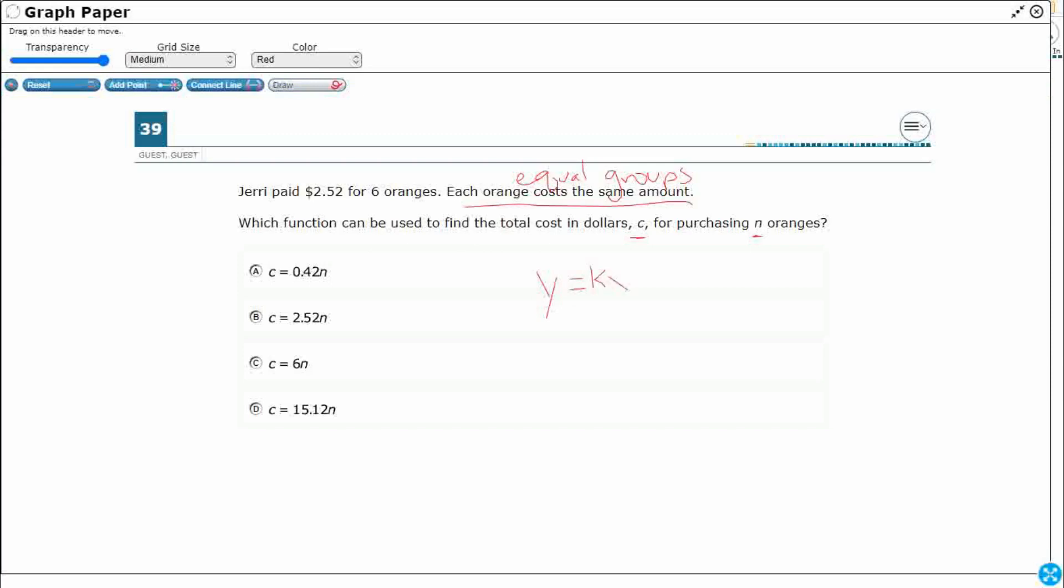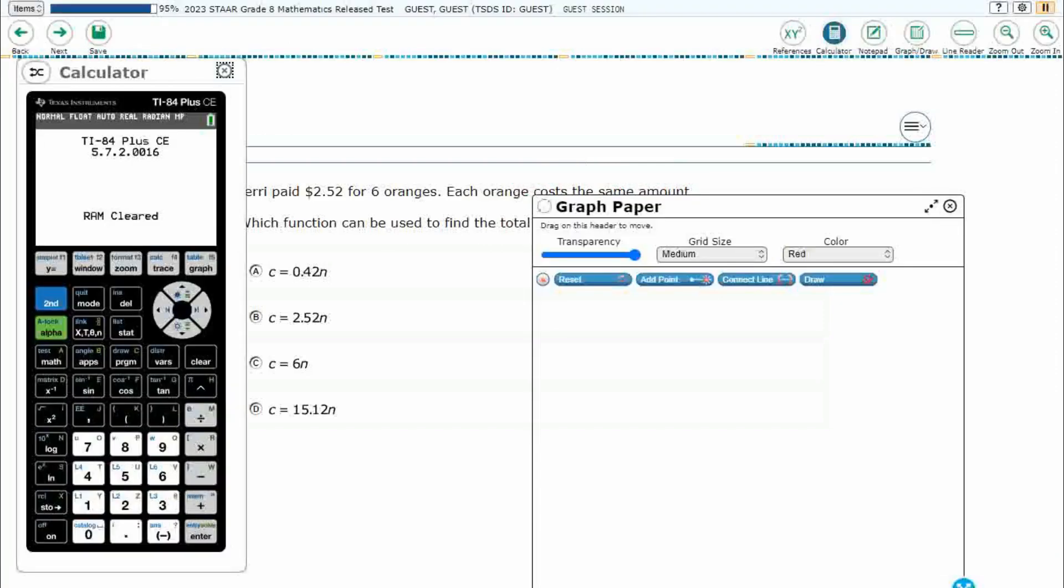y equals kx. This is called direct variation. So, it's pretty simple. We've got $2.52, 6 oranges that each cost the same amount. So let's get the calculator out.